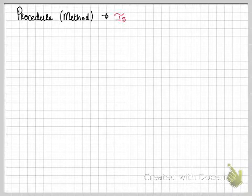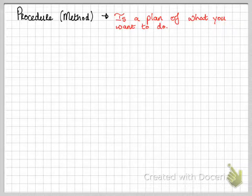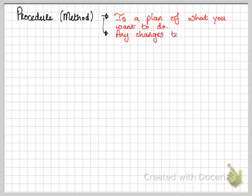Next is procedure or method. This is a plan of what you want to do during the experiment. Any changes to this plan should be mentioned in the evaluation.